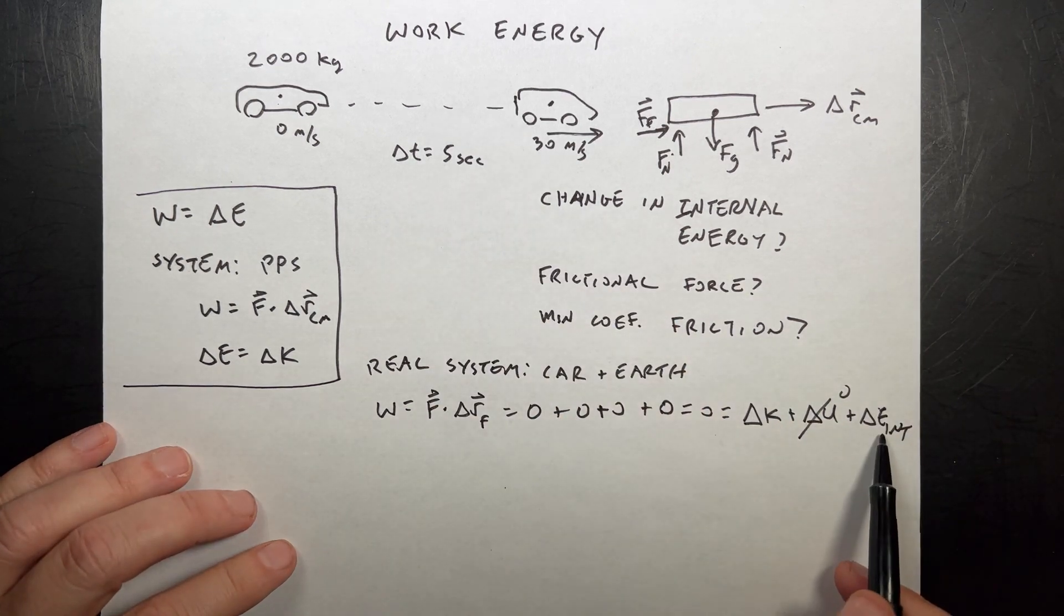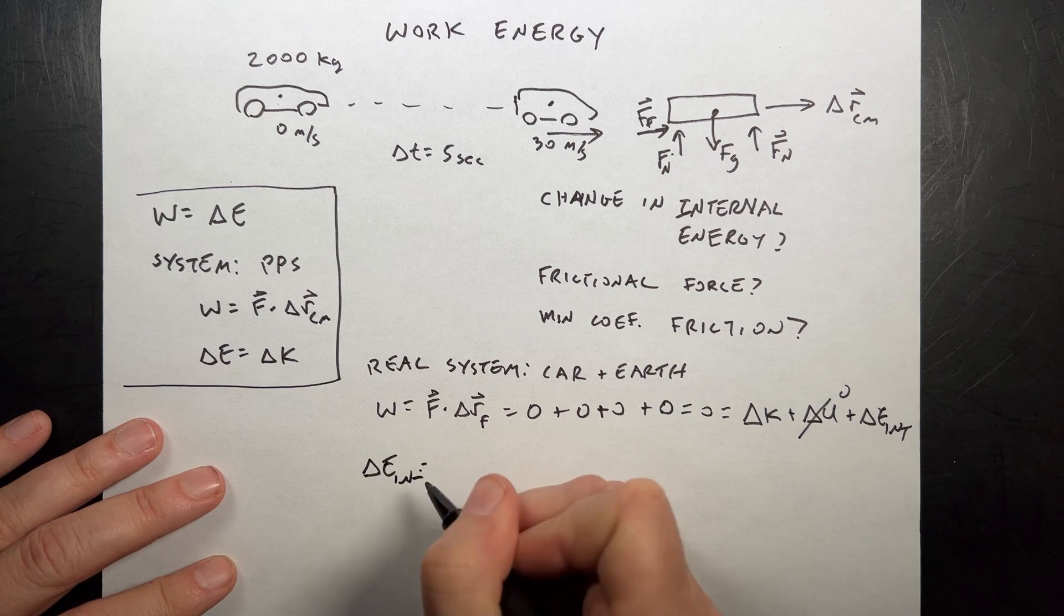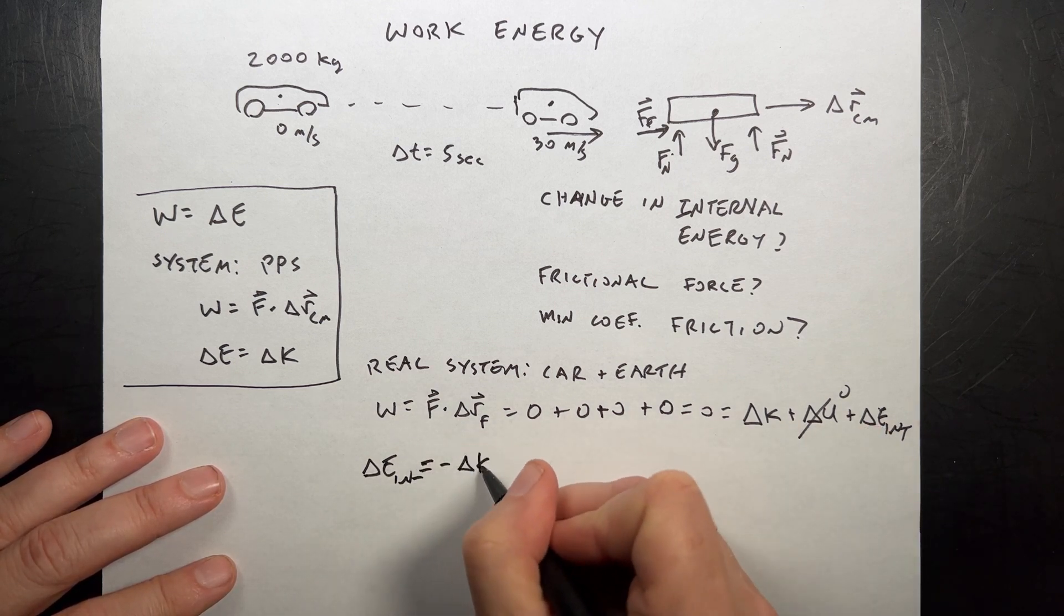That only depends on the vertical position. And if I know the change in kinetic energy, I can find the change in internal energy. So the change in internal energy is, because the work's zero, is negative the change in kinetic energy.